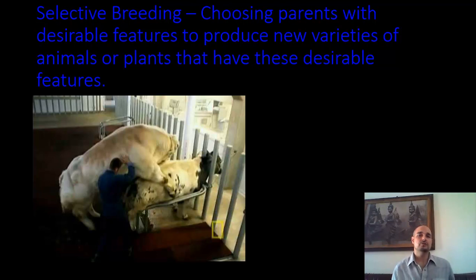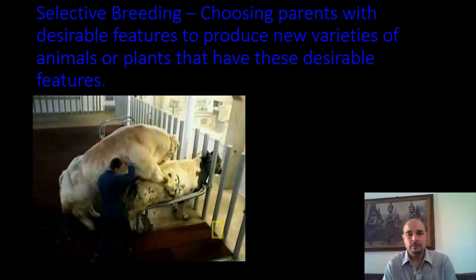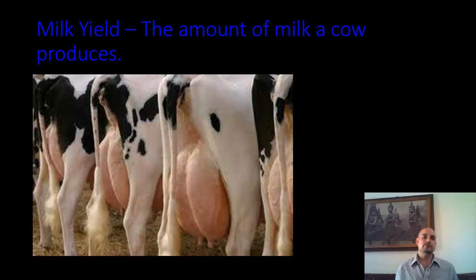Selective breeding is choosing parents with desirable features to produce new varieties of animals or plants that have these desirable features. The male bull cow passes his genes for large muscle mass to the female, and she also has a gene for large muscle mass, and they will produce cows with large muscle mass. Another desirable feature is milk yield — the amount of milk a cow produces — and so this is a desirable feature that humans want, so we breed for this.